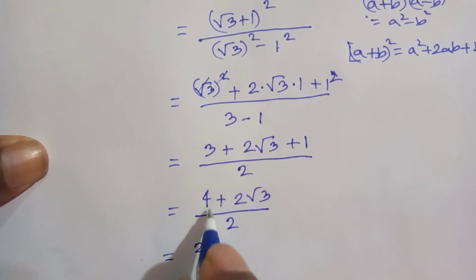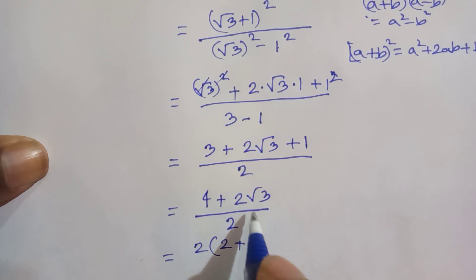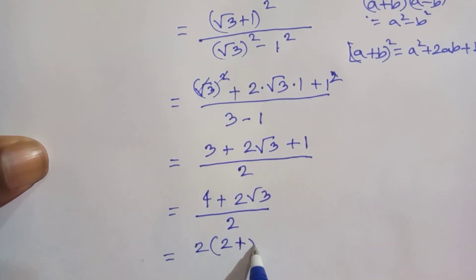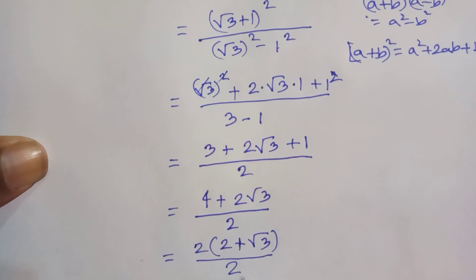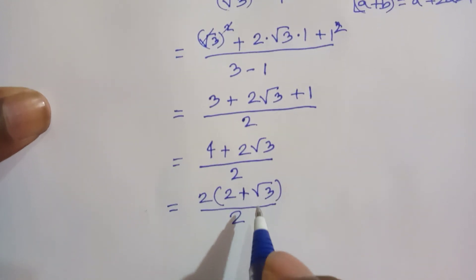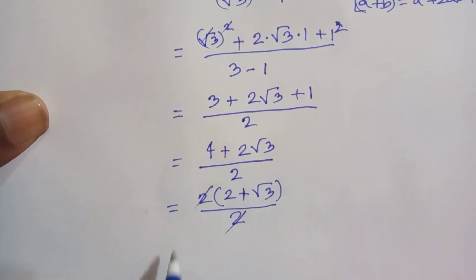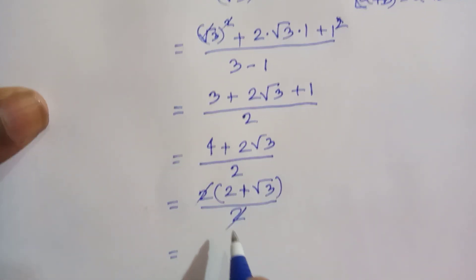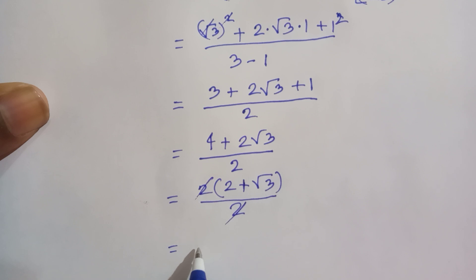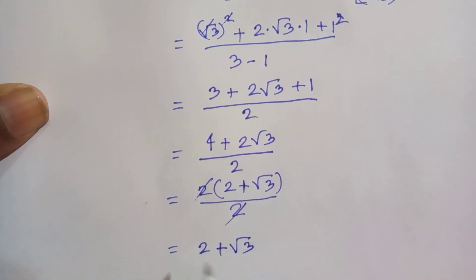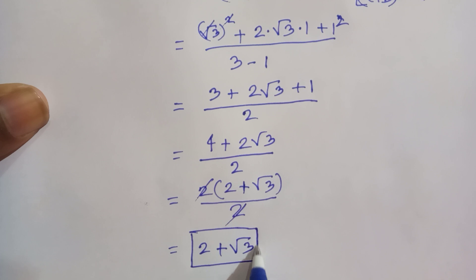Taking out the factor of 2: 4 divided by 2 is 2, and 2 root 3 divided by 2 is root 3. The 2s cancel, so finally the result is 2 plus root 3. This is the value of this equation using Method 1.